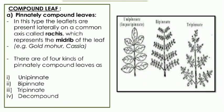In tripinnate, the branches produce secondary branches — both primary and secondary branches are present. In decompound, like coriander, there is no clear differentiation of branches; the leaf is highly dissected. Hence, coriander is an example of the decompound leaf.